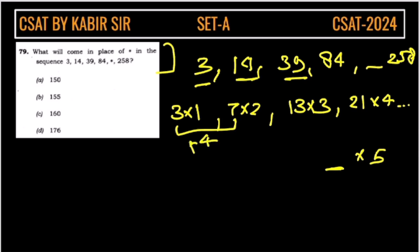So, plus 4 we are doing and 7 we are getting 13. So this is plus 6, this is plus 8 then we will get plus 10. So, this will be 31.